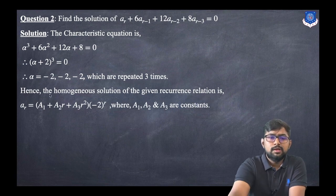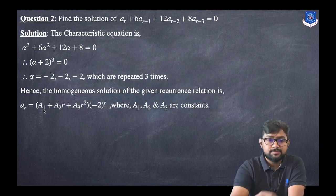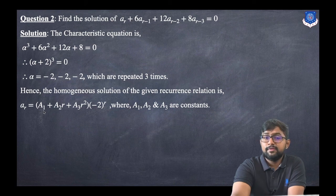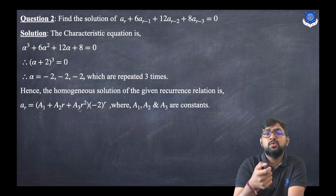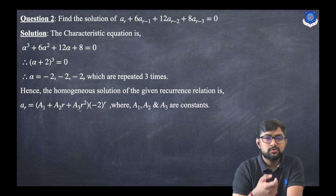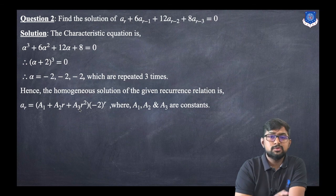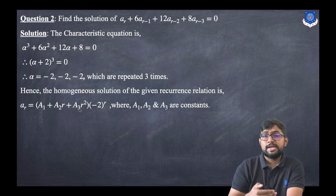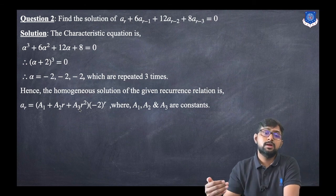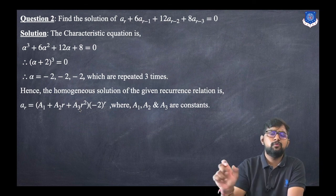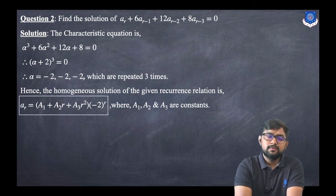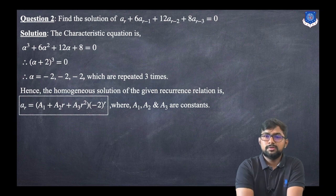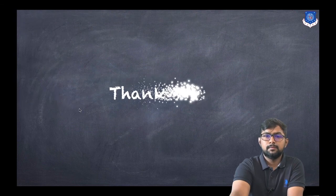Since the root -2 repeats 3 times, the homogeneous solution is: a_r = (a_1 + a_2 * r + a_3 * r^2) * (-2)^r. If the root were to repeat 4 times, the solution would be: a_r = (a_1 + a_2 * r + a_3 * r^2 + a_4 * r^3) * α^r, where a_1, a_2, and a_3 are constants. This is the final solution for the case of repeated roots.